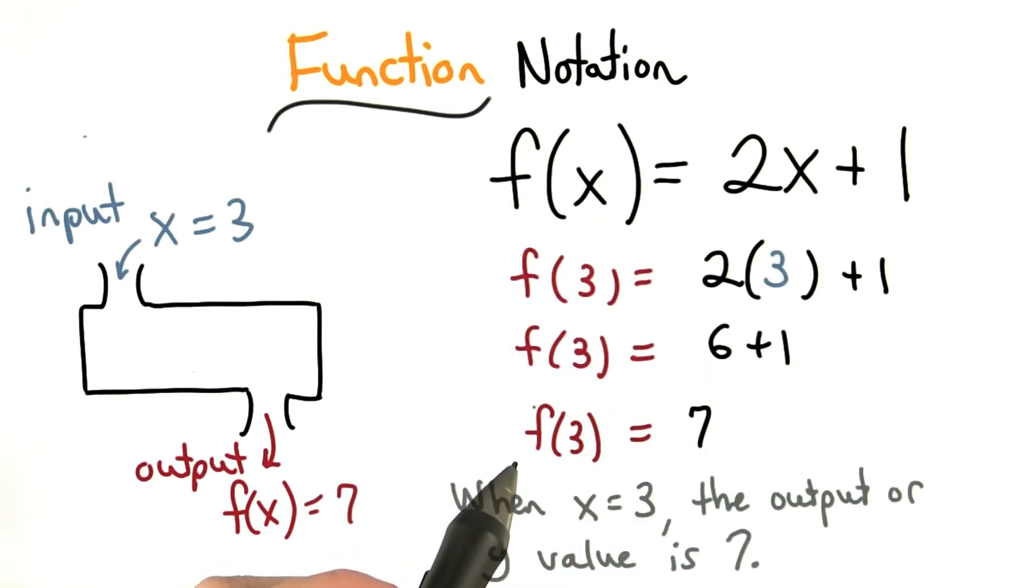When you see a statement like this, you really want to think of it in terms of the outputs and inputs. When the input x is equal to 3, the output of the function, or the y value, is 7.